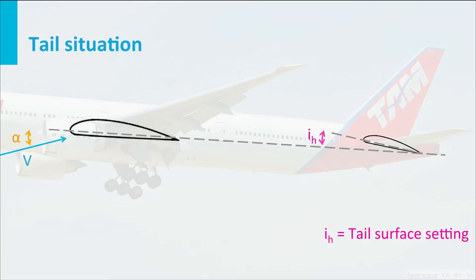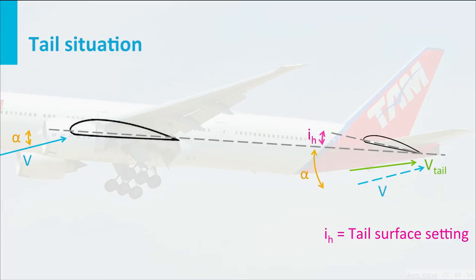If we look at the angle of attack at the wing — the angle between the body axis and the speed — you might think it is the same at the tail except for the angle of incidence, but this is not true. The wing generates a lot of lift; the net effect is that air is pushed down by the wing shape and its angle of attack. This means the angle of attack at the tail is actually slightly less. The air is bent downwards a little, and this different angle of attack at the tail is reduced by the downwash angle, which we write as epsilon.